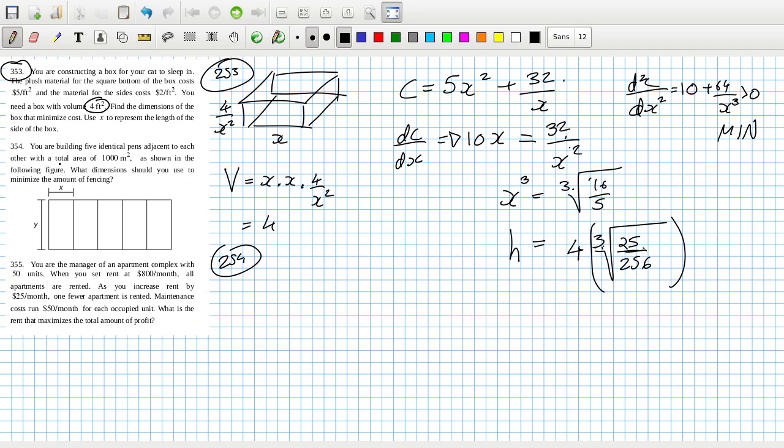Building five identical pens adjacent to each other with a total area of a thousand meters squared are shown in the final figure. What dimensions should you use to minimize the amount of fencing? Interesting.